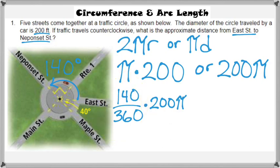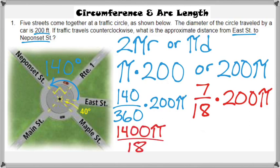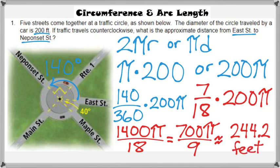The rest is just algebra. 140 over 360 reduces to 7 over 18. Multiply that by 200 to get 1400 pi over 18, which simplifies to 700 pi over 9. Using a calculator, dividing 140 by 360, multiplying by 200, then by 3.14, gives an approximate answer of 244.2 feet of distance.